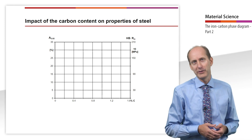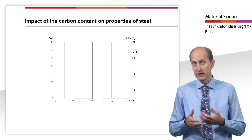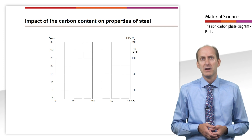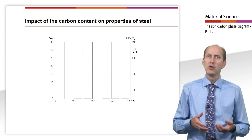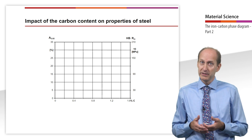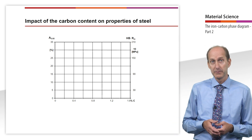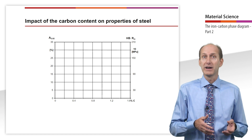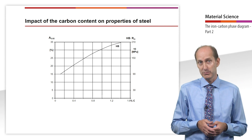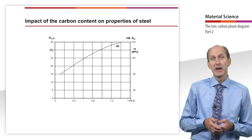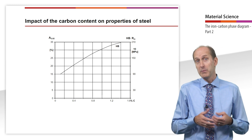Engineers are not interested in the structure merely because it is nice to look at. Instead, we want to draw conclusions about the mechanical properties that result from the microstructure. With knowledge about the various hypo- and hypereutectoid microstructures, we are now able to understand the development of mechanical properties of steel as a function of carbon content. The increase of the hardest component — cementite — is a linear function of the carbon content, resulting in an almost linear increase in hardness HB. The percentage of cementite is, however, not the only decisive factor; we also need to look at its position within the microstructure.